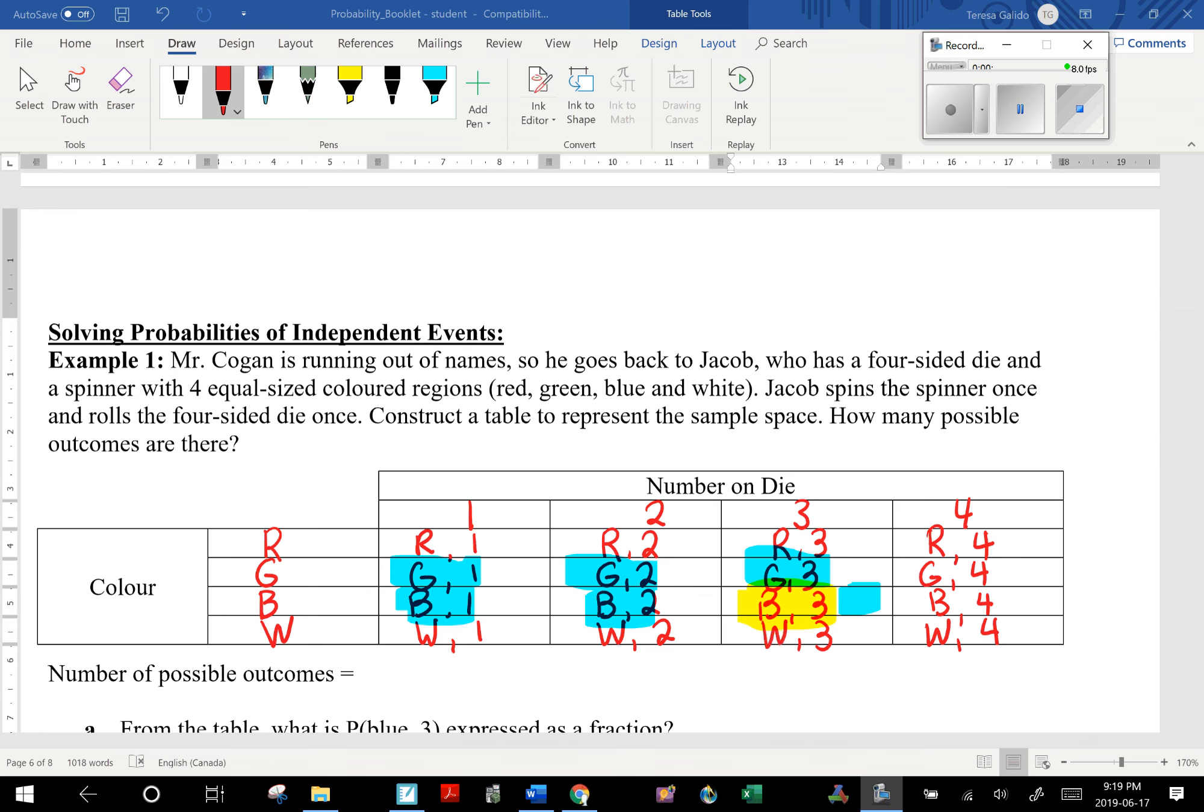Very odd example here. But anyway, Jacob spins the spinner once and rolls the four-sided die once. Construct a table to represent the sample space. How many possible outcomes are there?